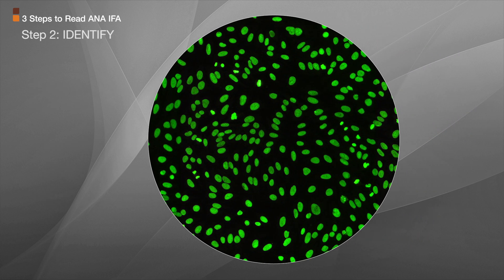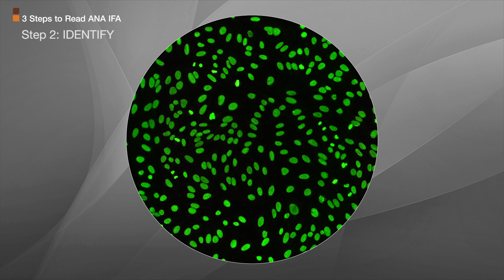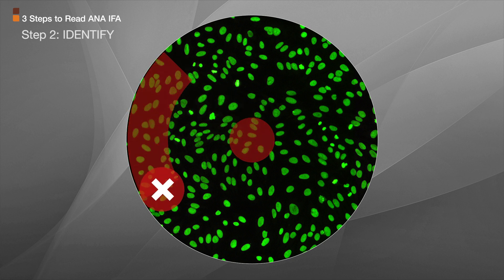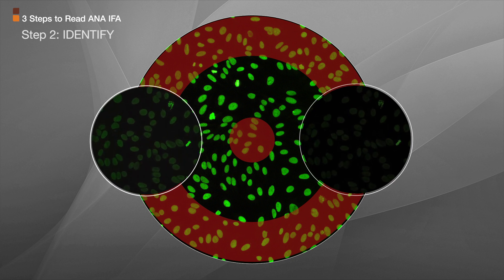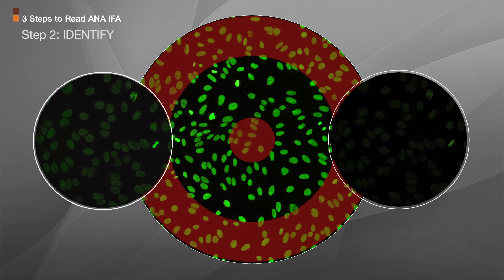Step 2: Find the appropriate reading area, which is usually one to two fields of view from the center but away from the edge. Remember, this is the most important step — determine whether the specimen is positive or negative. In other words, if you don't see a clearly discernible pattern in the nucleus of the interphase cell, then the ANA-IFA is negative.